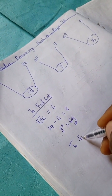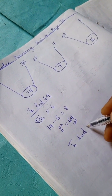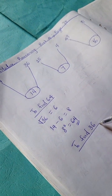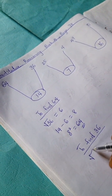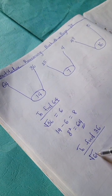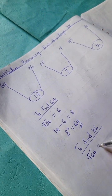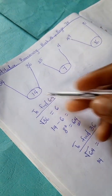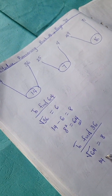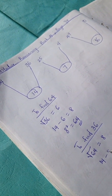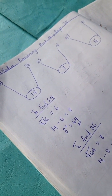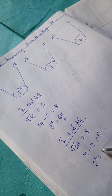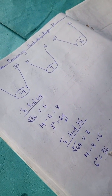To find 36, we take the square root of 64, which is 8. So 14 minus 8 equals 6, and 6 squared equals 36.